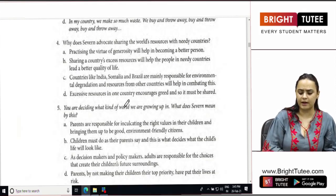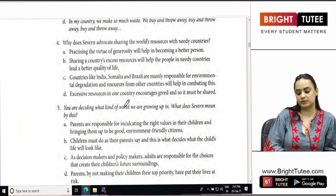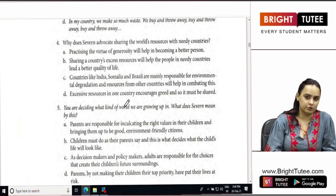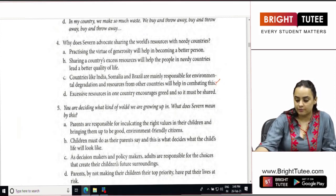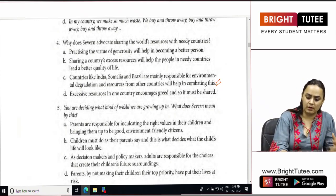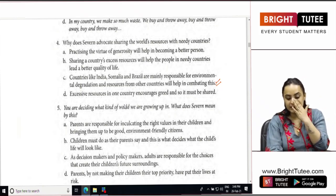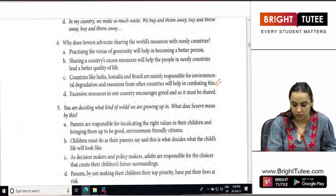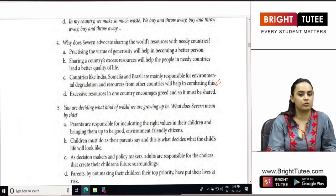Why does Severn advocate sharing the world's resources with needy countries? So why did she want the needy and the poor countries to get the resources from the rich countries? Because she felt that the countries like Somalia, India, Brazil, they are responsible for the environmental degradation and the resources from the other countries will help them.